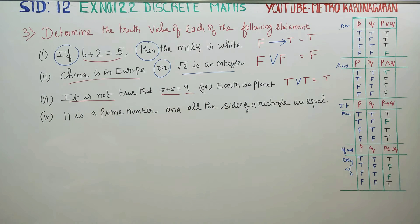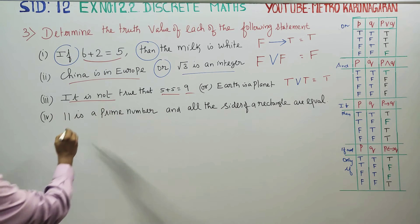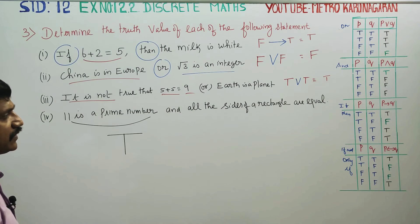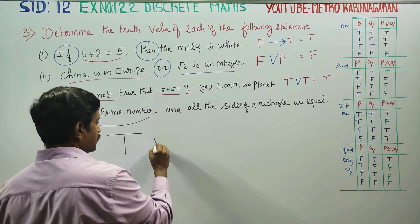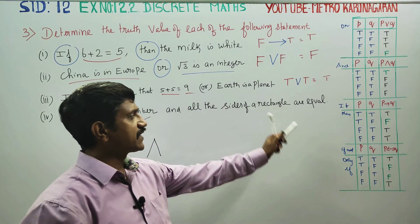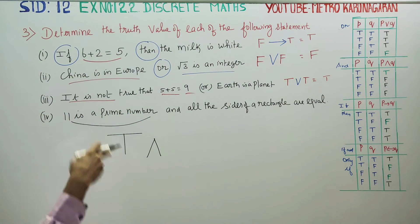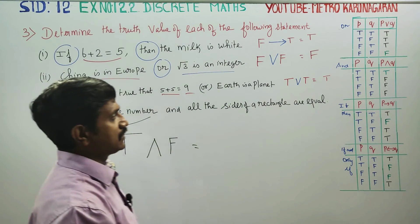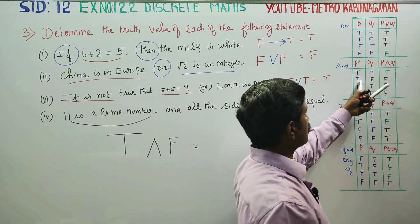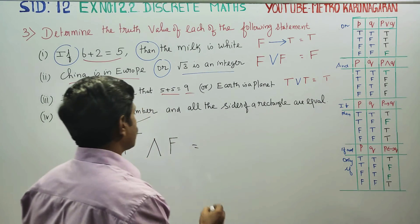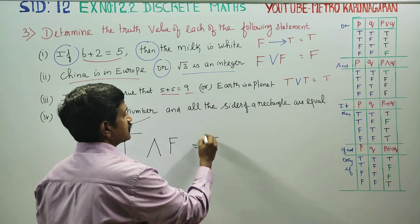Last statement: 11 is a prime number — yes, this is true. The AND (∧) connective uses an inverted V symbol. All sides of a rectangle are equal — this is a false statement, only opposite sides are equal. So true AND false gives the answer as false.